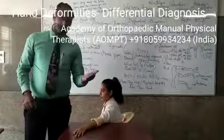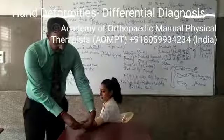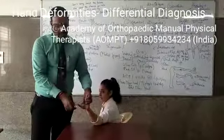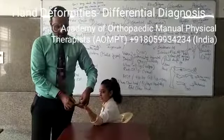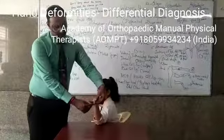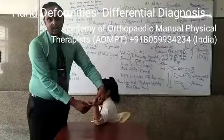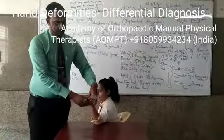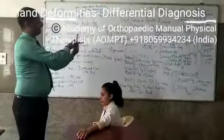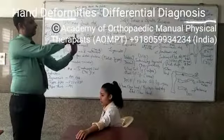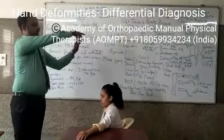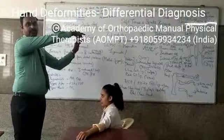The opposite of swan neck deformity: in swan neck deformity you have flexion at the MCP, extension at the PIP, and flexion at the DIP. So indirectly you see: flexion here, extension here, and again flexion here — this is swan neck deformity.